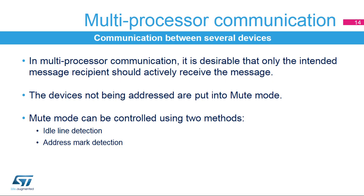To simplify communication between multiple processors, the USART supports a multiprocessor mode. In multiprocessor communication, it is desirable that only the intended message recipient should actively receive the message. The devices not being addressed are put into mute mode. The USART can enter or exit from mute mode using one of two methods: idle line detection and address mark detection.